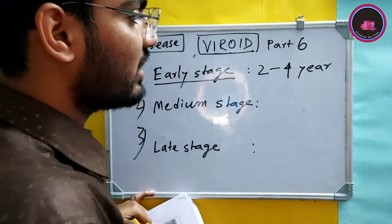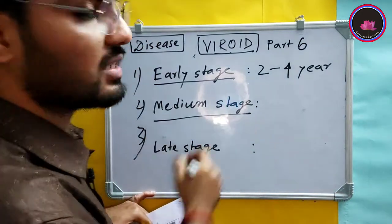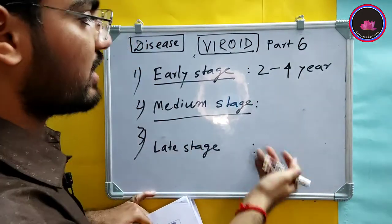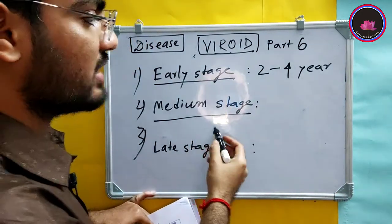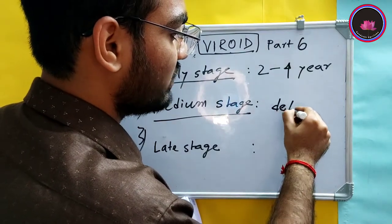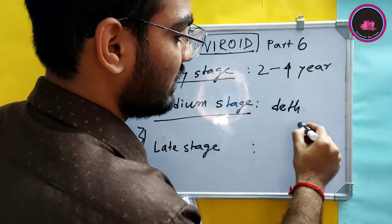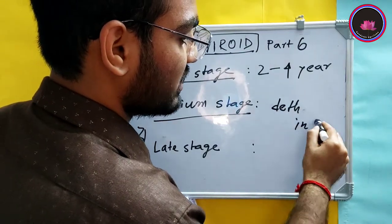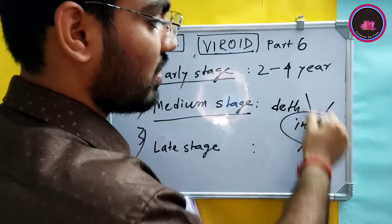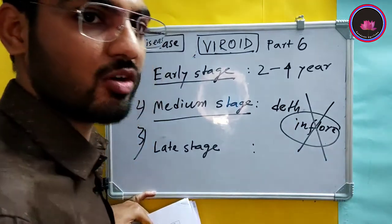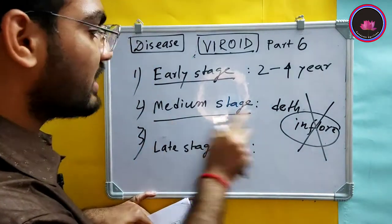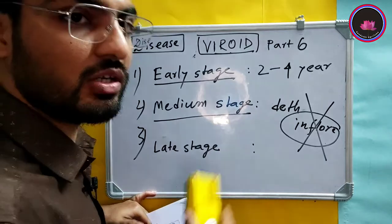After 2 years from the early stage, the medium stage arrives, characterized by the death of the inflorescence. Because the inflorescence is damaged, there will be no fruit production in the medium stage.